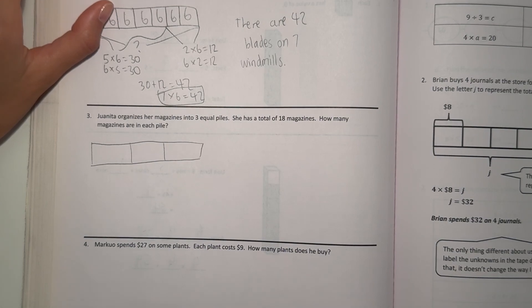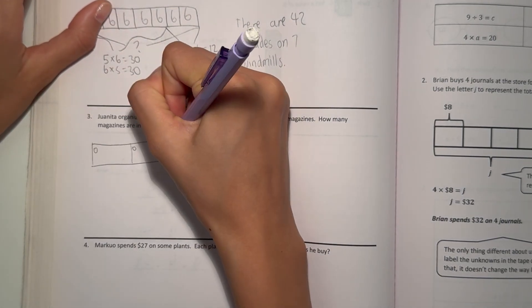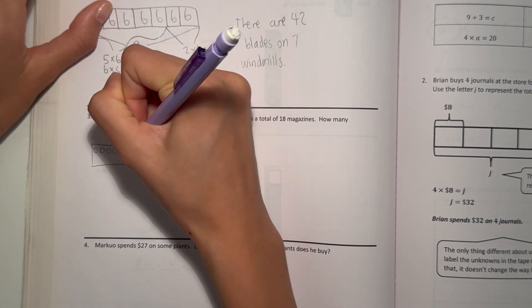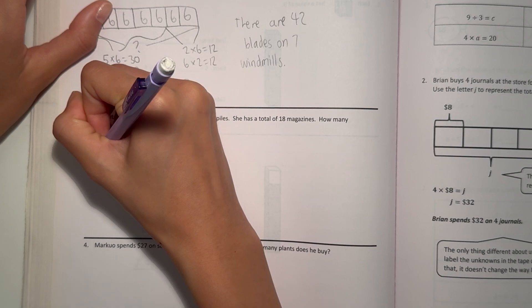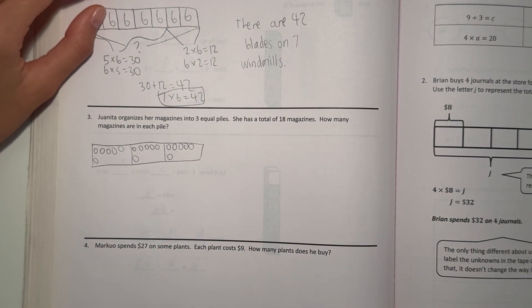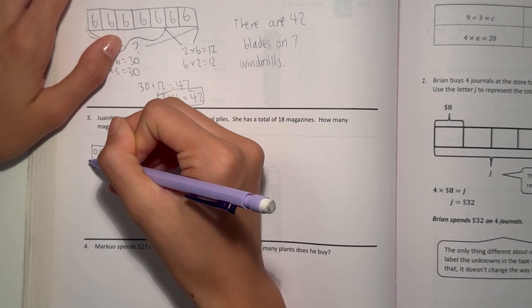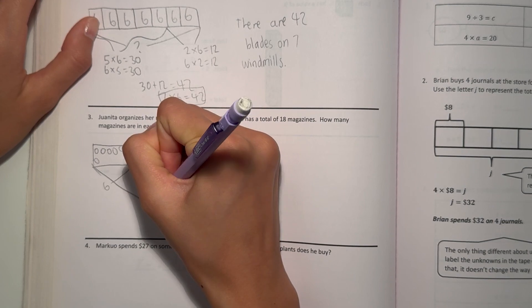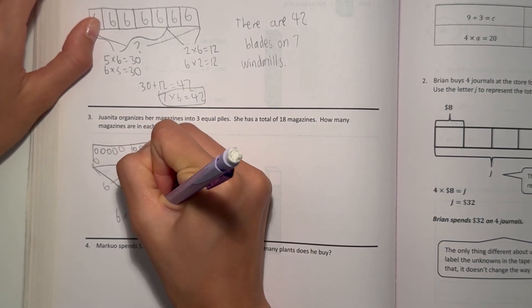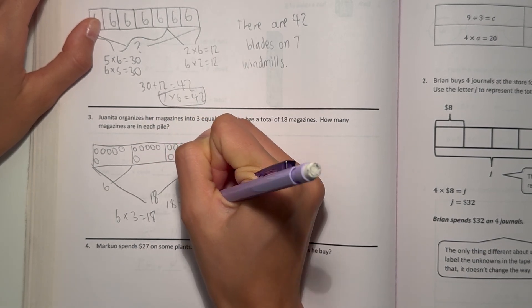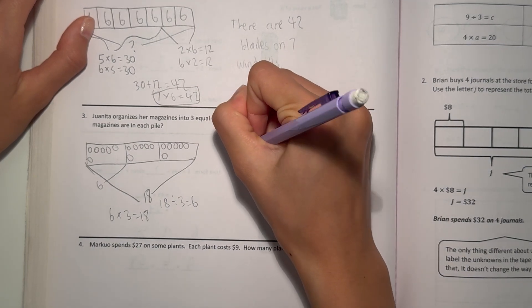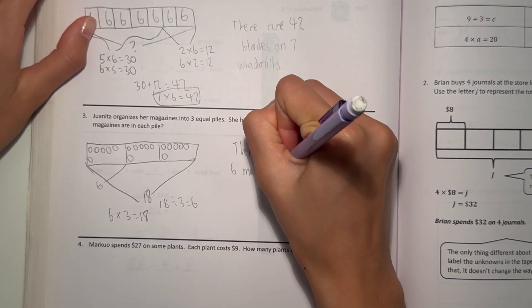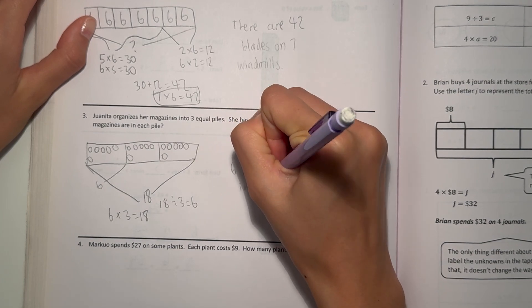Alright, our tape diagram. Three equal piles. And there's 18 in total. So we can keep on drawing until we reach 18. So we can have 1, 2, 3, 4, 5, 6, 7, 8, 9, 10, 11, 12, 13, 14, 15, 16, 17, 18. So we reach 18, and they're all equal. That means we have 1, 2, 3, 4, 5, 6 magazines in each pile. So we have 6, and our total is 18. So we have 6 times 3 is 18. Because 18 divided by 3 is 6. So there are 6 magazines in each pile.